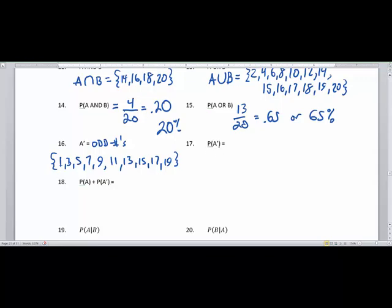What you find in problem number 17 is that what we have is we have 10 elements in A prime and 20 elements in S, which gives us a 0.5 or 50% if we wanted to write that stylistically, and that gives us our percentage pretty easily. Now the probability of A that we found out earlier, if you look back at problem 10, was 0.5. And the probability of A prime that we just found in number 17 is 0.5.